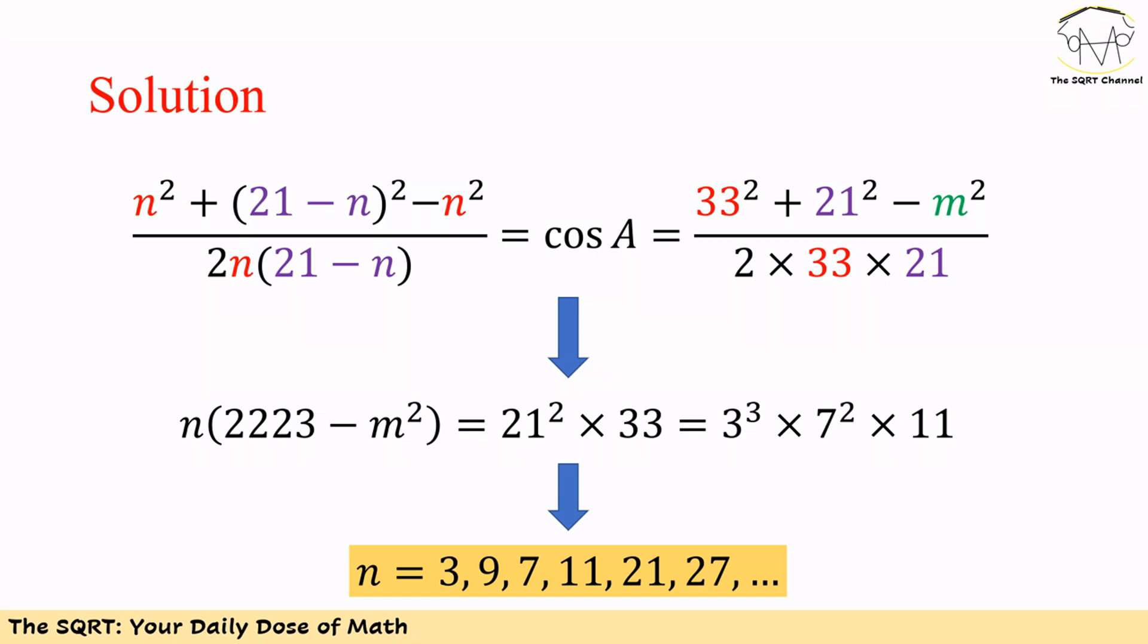We want to find the value that we can have for N. Let's assume that N is equal to 3, then 2223 minus M² is going to be 3² times 7² times 11.